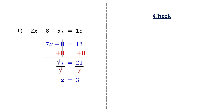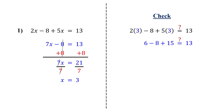To check our solution, we plug in 3 for x back into the original equation and simplify. 2 times 3 is 6, and 5 times 3 is 15. Now simplify left to right: 6 minus 8 is negative 2, then negative 2 plus 15 is 13. Both sides of the equation are equal, confirming that 3 is the correct solution.